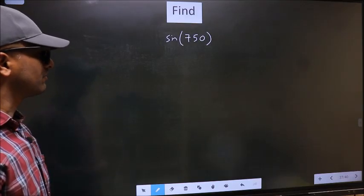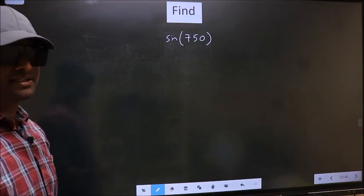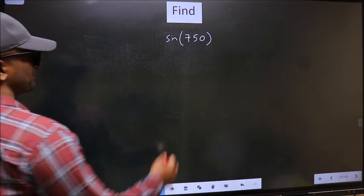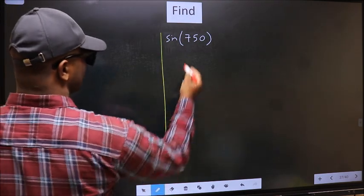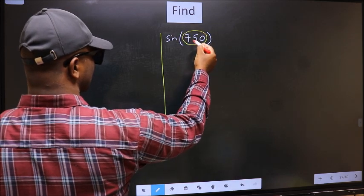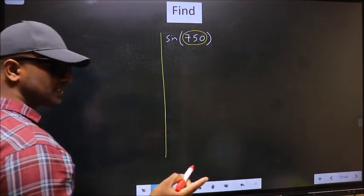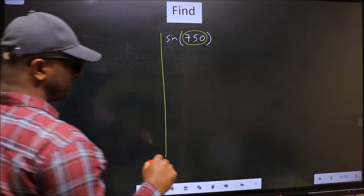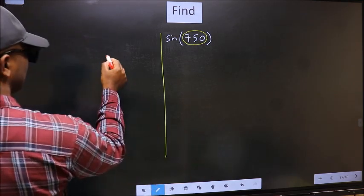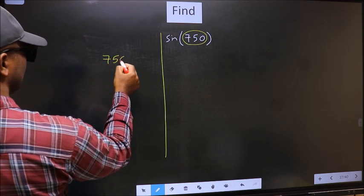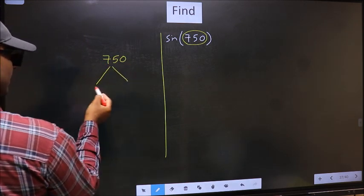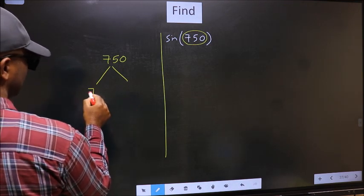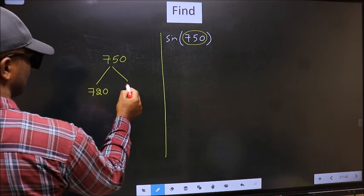Find sin(750). To find this, we should follow this method. See, here we have 750. Now you should check: 750 lies between which two multiples of 180? What I mean is, 750 lies between which two multiples of 180? That is 720 and 900.